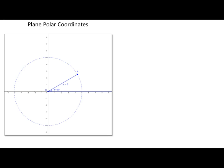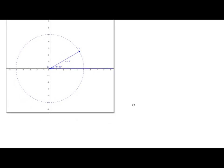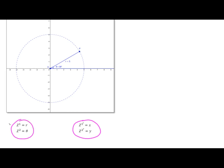Our first example is a transformation between plane polar coordinates and Cartesian coordinates. I have both coordinate systems illustrated — the value r for polar coordinates out to point P, the angle theta, and the Cartesian coordinate system with the x-axis and y-axis. The primed coordinate system will be represented by Cartesian coordinates, and our unprimed system will be represented by plane polar coordinates.